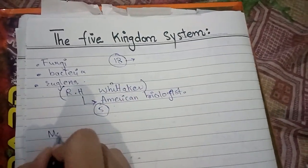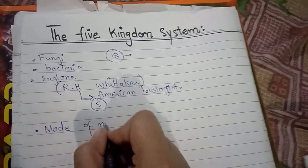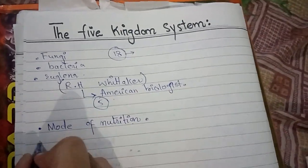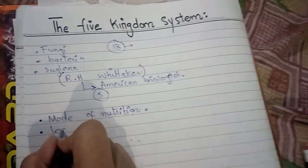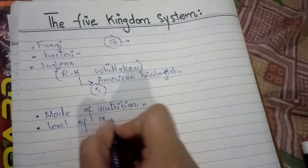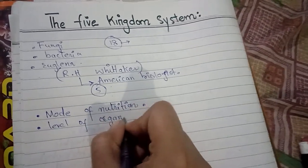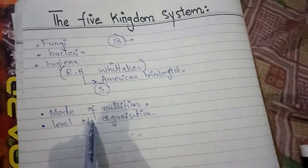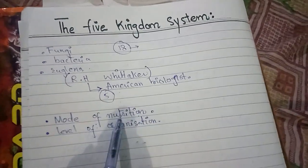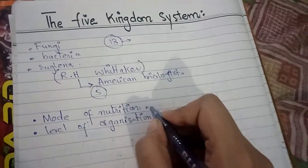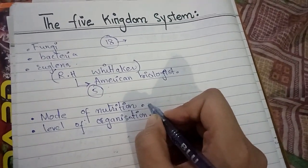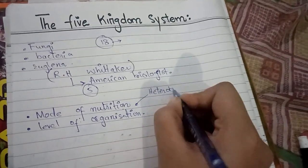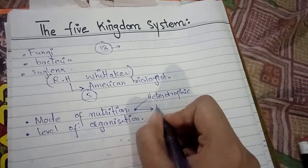The first category is the mode of nutrition, and the second is the level of organization. In terms of mode of nutrition, two types were given: one is heterotrophic and the other is autotrophic.